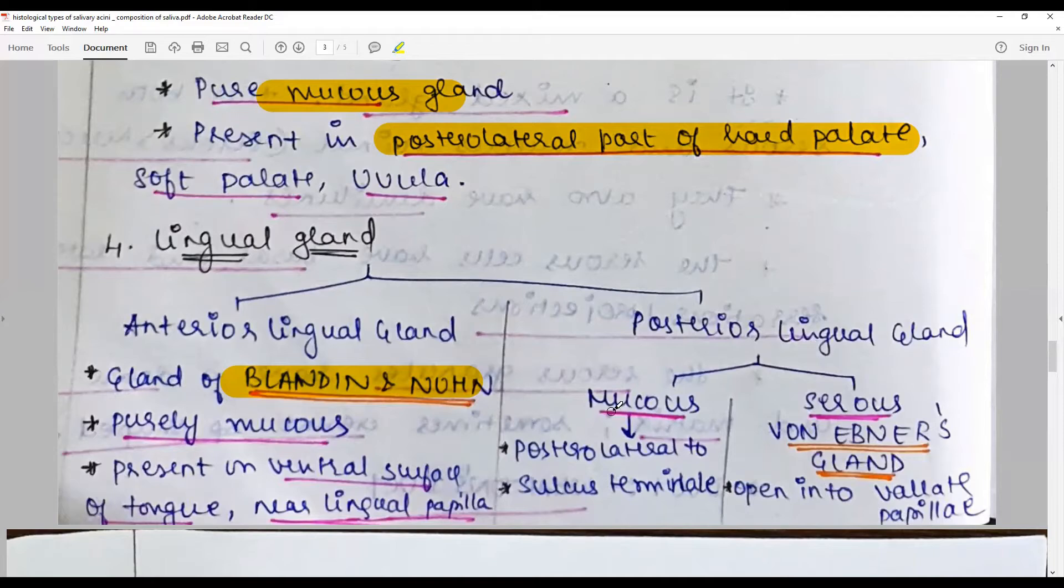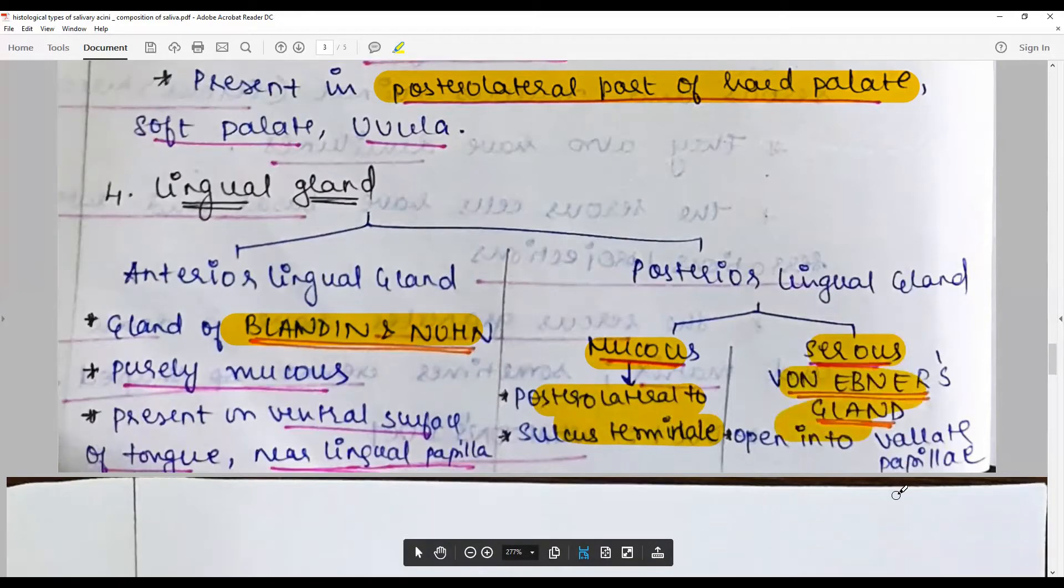Posterior lingual gland can be either mucous, posterior lateral to sulcus terminalis, or serous - Von Ebner glands - and open into the circumvallate papilla.